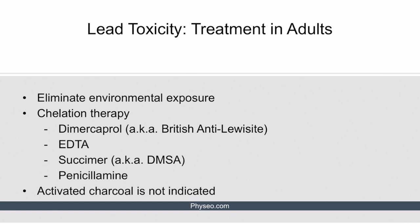Treatment of lead toxicity in adults begins with elimination of environmental exposure. The remainder of treatment revolves around chelation therapy. Pharmaceutical options include dimercaprol (also known as British anti-lewisite), EDTA, succimer (also known as DMSA), and penicillamine. Examiners expect students to know both names for dimercaprol and succimer, so take the time to learn both. Activated charcoal is not indicated in recent ingestions of lead, as it has not been shown to be useful — examiners may include it as a wrong answer choice.